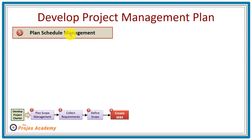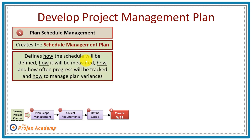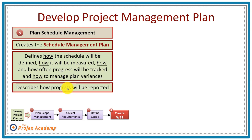Step five is to plan schedule management. Just like I said earlier, these are strategies. It creates the schedule management plan and defines how the schedule will be defined, how it will be measured, how and how often progress will be tracked, how to manage plan variances, and how progress will be reported.